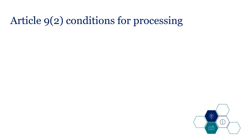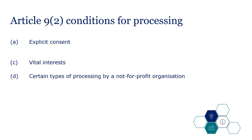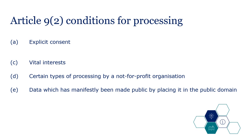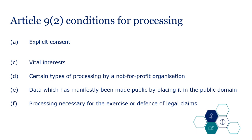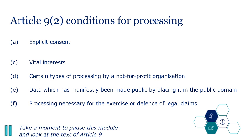These conditions are grouped together because they are complete as they stand in the UK GDPR. They cover, in summary: A, explicit consent; C, vital interests; D, certain types of processing by a not-for-profit organisation; E, data which has manifestly been made public; and F, processing necessary for the exercise or defence of legal claims. You could pause this module and look at the text of these five conditions in Article 9.